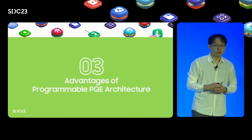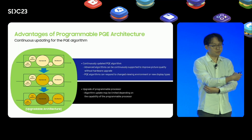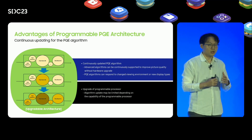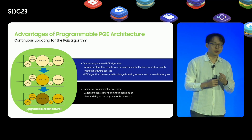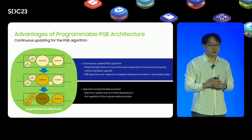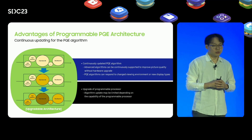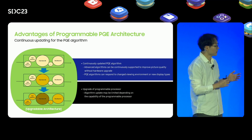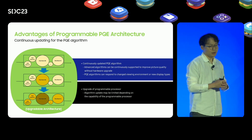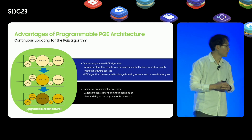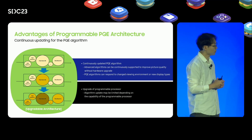Next, I'm going to show what we get out of that. The first benefit is continuous updating of the PQE algorithm. When updates are available, customers will be able to continuously receive the most recently developed algorithms. Through this, we would like to provide consumers with improved picture quality. Not only improved picture quality — we can make new algorithms that fit changed viewing environments or new display types. Of course, these kinds of updates are only possible within the capability of the programmable processor, so we will continue to upgrade the programmable processor itself.